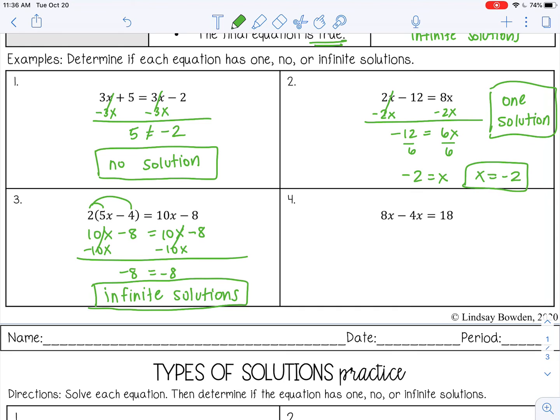All right, number 4, we have like terms. So 8x minus 4x, that's 4x. And then divide by 4 on both sides. So x equals 4.5. So there's just one solution to this problem. Okay, you can stop the video now and complete the practices.